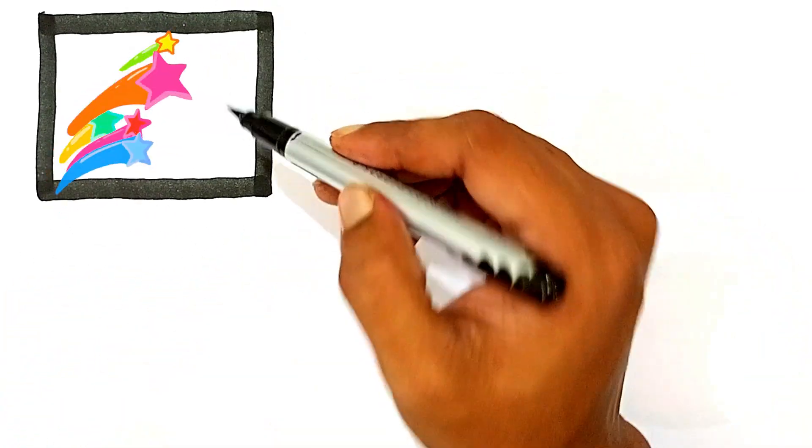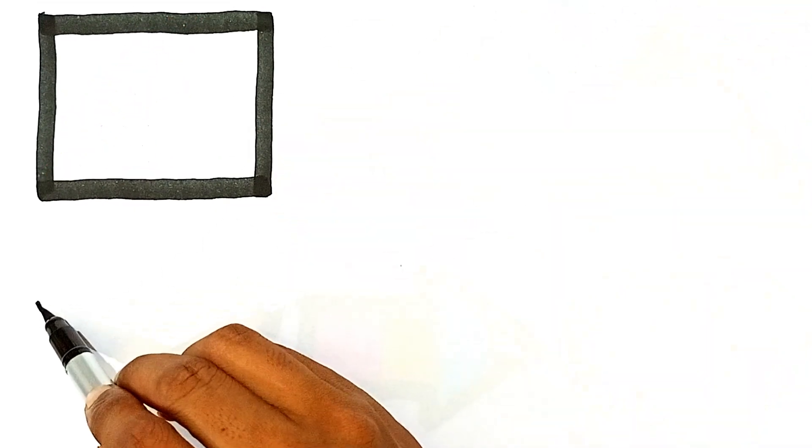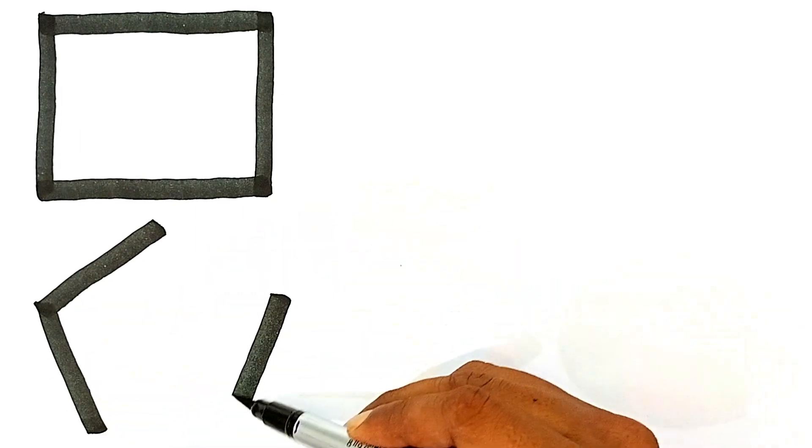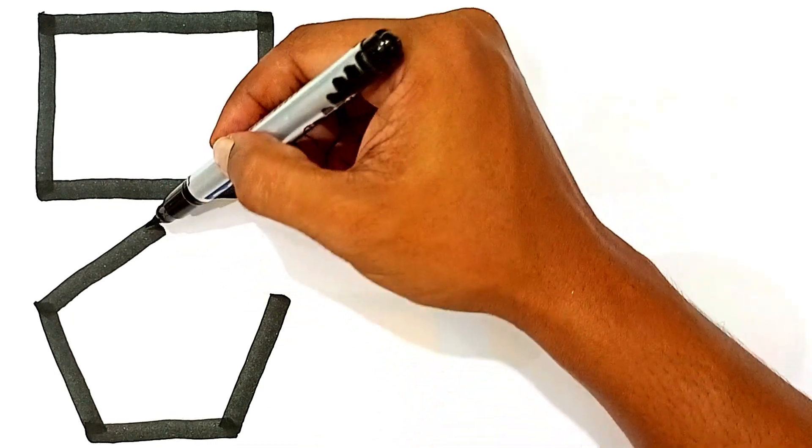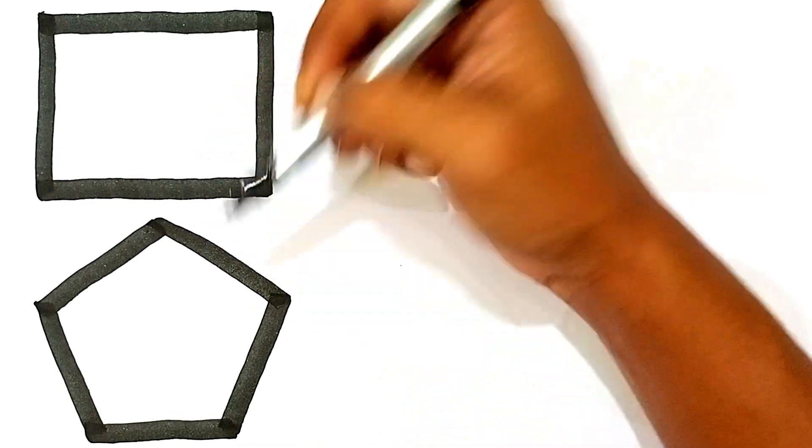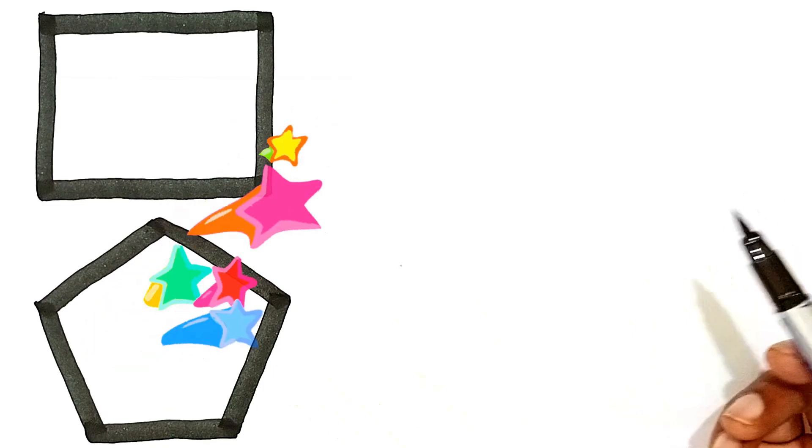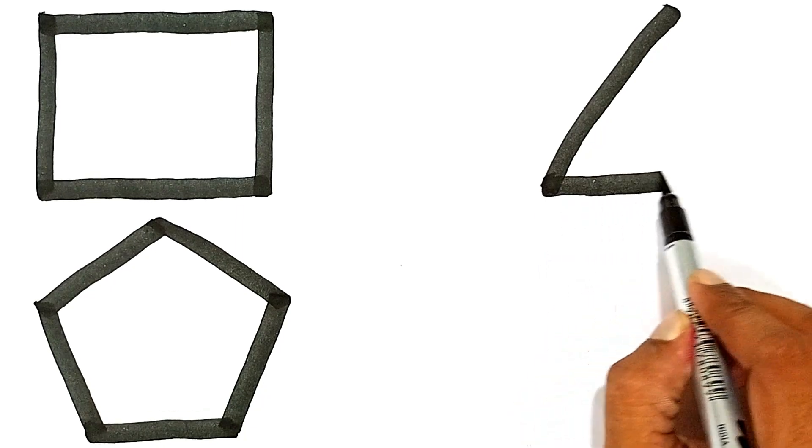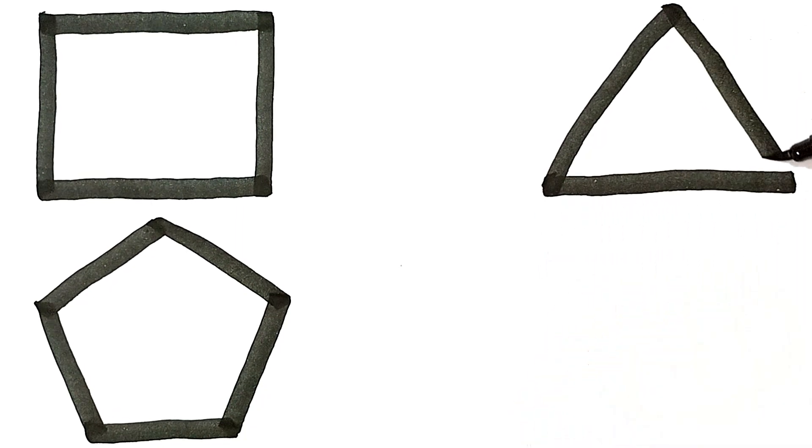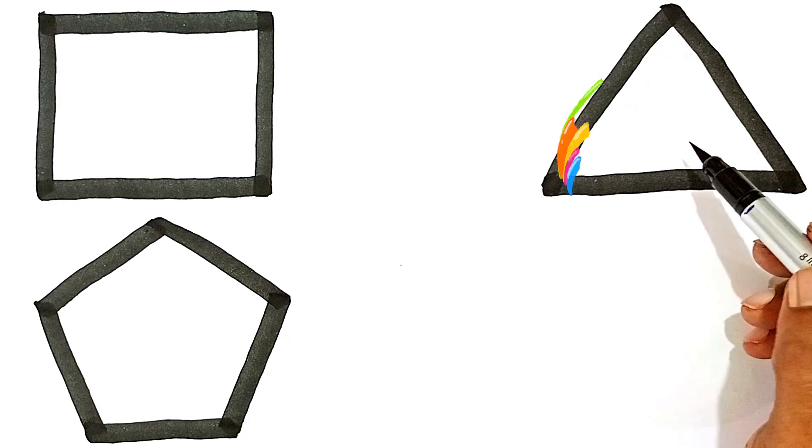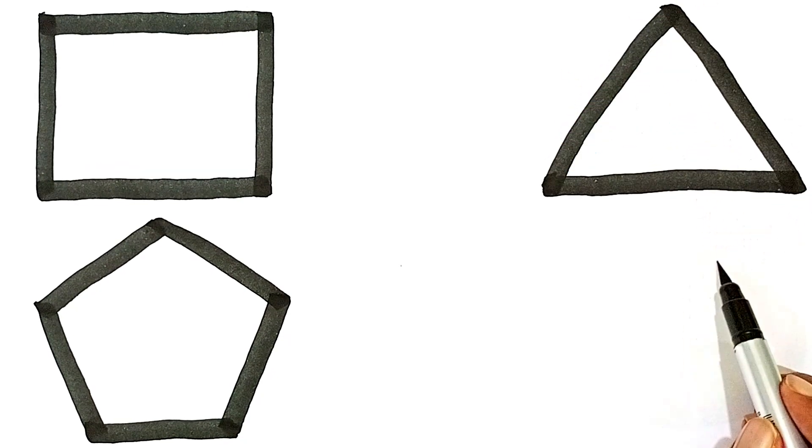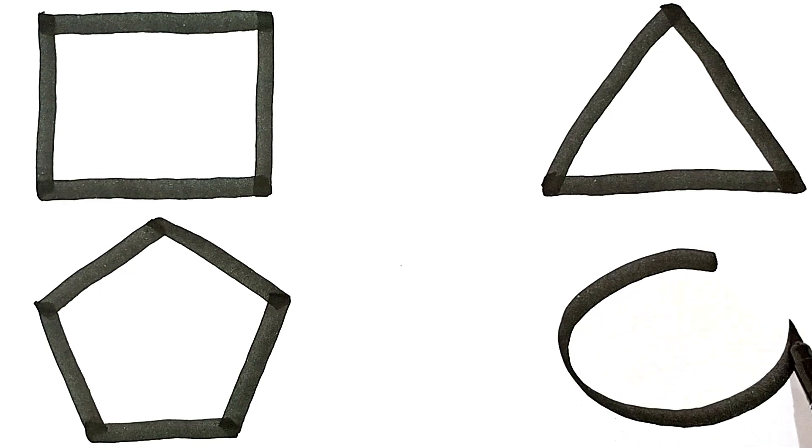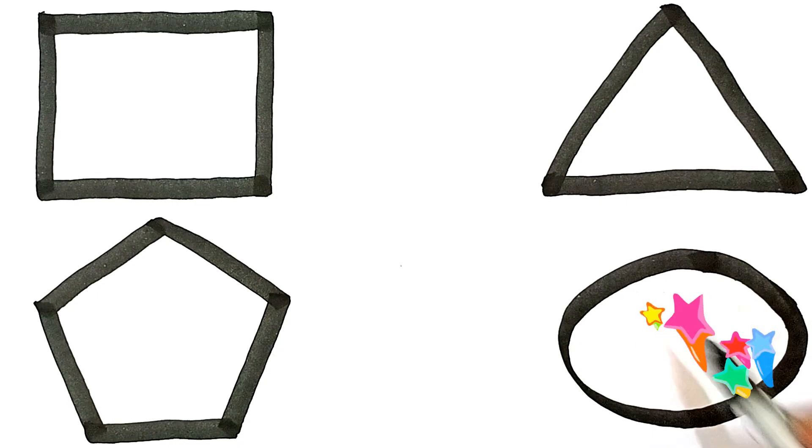This shape's name is square. This shape's name is pentagon. This shape's name is triangle. This shape's name is oval.